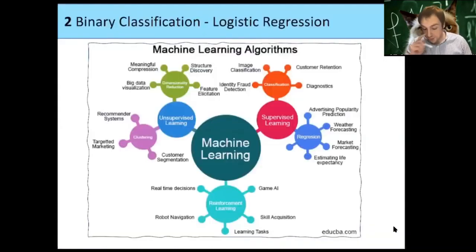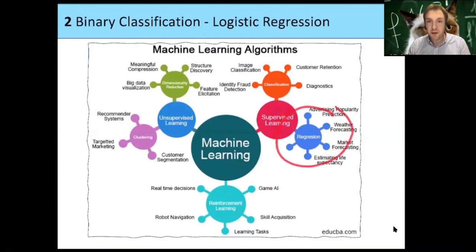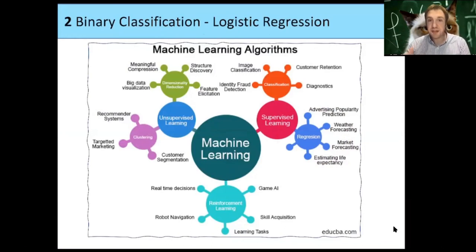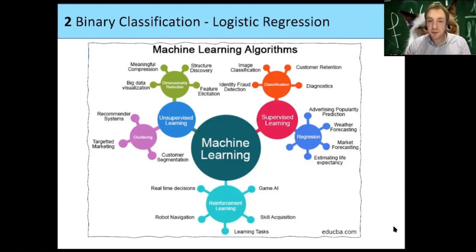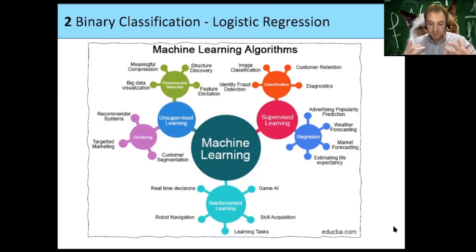In the first two lectures we talked about linear regression, which was part of supervised learning where we used the concept of regression — meaning the target output space was something continuous, so we wanted to predict some value. Logistic regression, even though it's called regression, is actually an example of classification, where the possible output is something discrete.